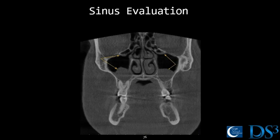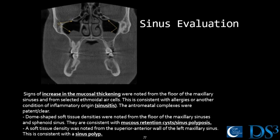The radiologist noticed increased mucosal thickening on the floor of the sinus — the lower area there — and said it may be due to allergies or a condition of inflammatory origin, such as sinusitis. They also noticed mucous retention cysts on the floor of the sinuses, and felt there may be a sinus polyp up in the top there as well. That's something we might want to talk about with our patient before we begin treatment.